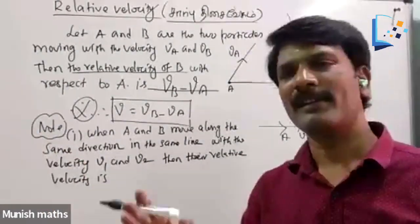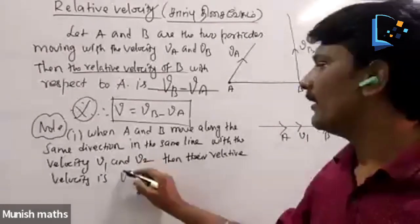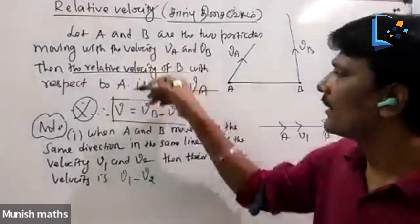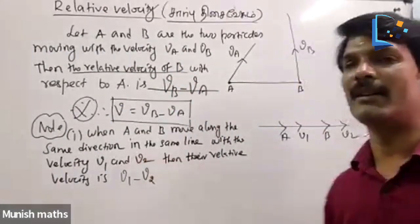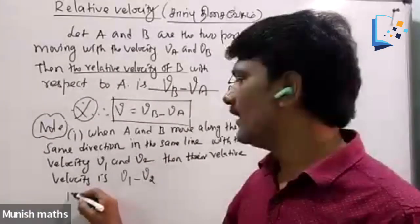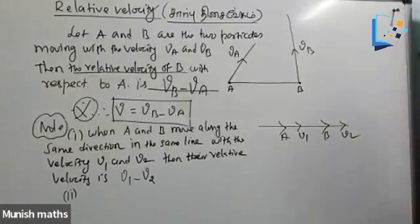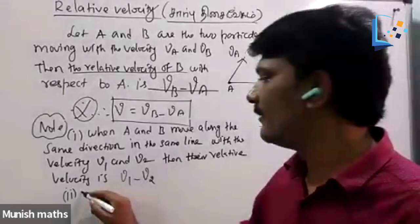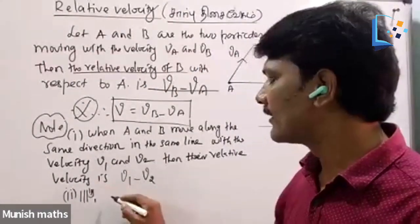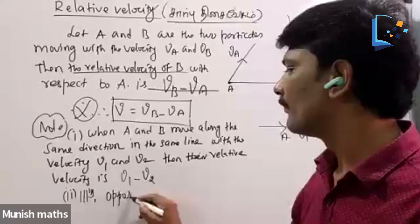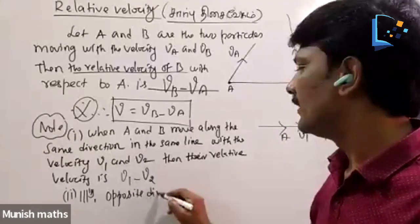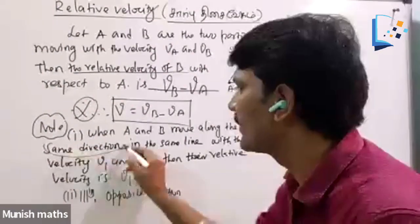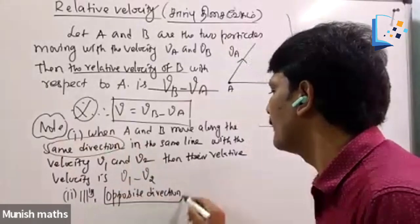I want to say, velocity: V1 minus V2. With respect to specificity, clearly. When A and B move along the same direction — opposite direction. Similarly, the concept for opposite direction. The same line concept: same direction. Opposite direction.